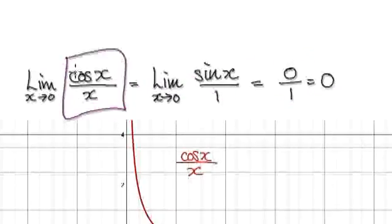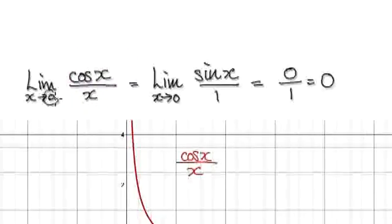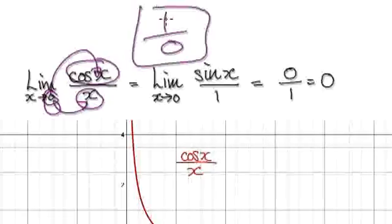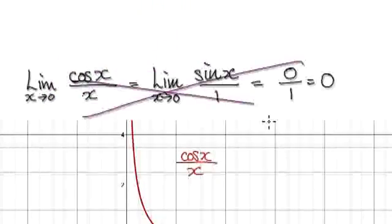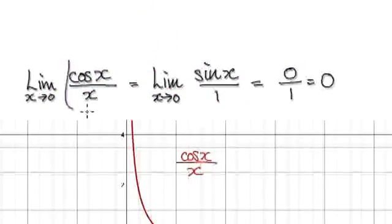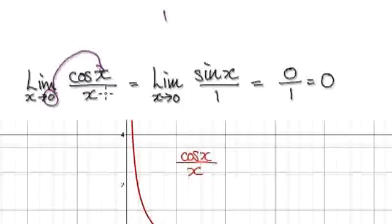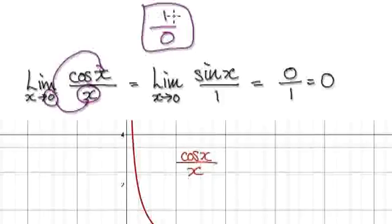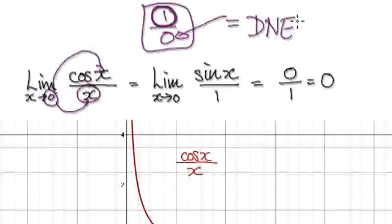The reason it's wrong is because the first thing you should do is check that it is of an indeterminate form. If you put 0 into the numerator, cos of 0 is 1 — a definite number. Put 0 into the denominator — that is 0. This is not an indeterminate form, so you cannot apply L'Hôpital's rule. There is a theorem that says if the numerator is a definite number and the denominator is 0, the limit does not exist.